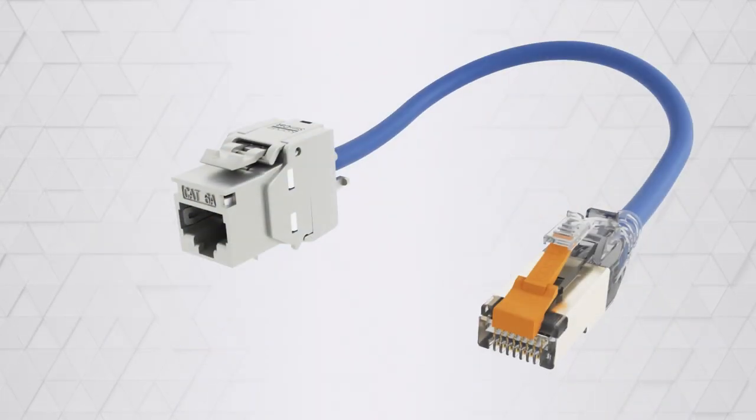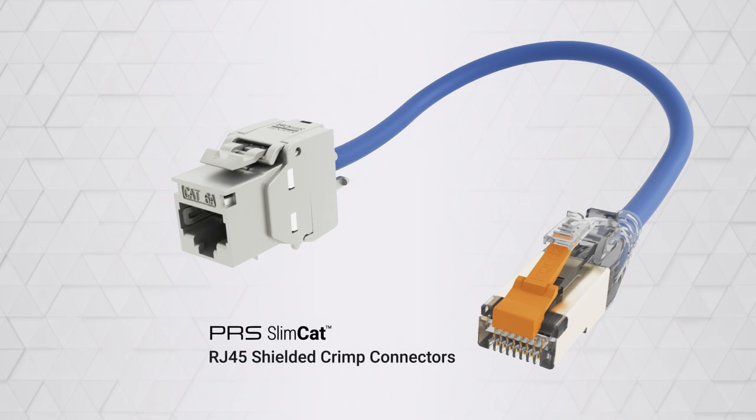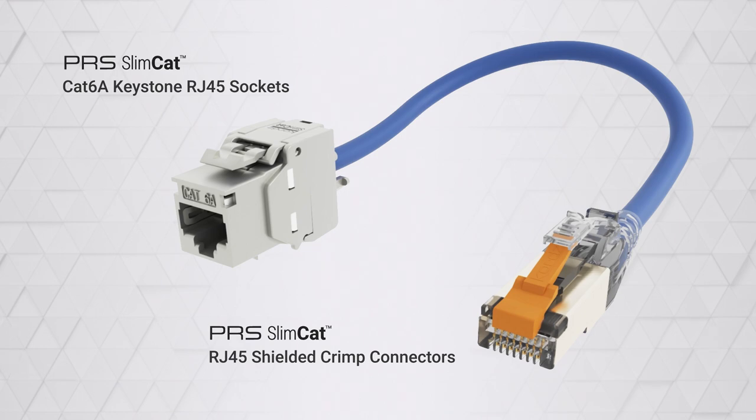Completing the Kord's PRS SlimCat system are the PRS SlimCat RJ45 shielded crimp connectors and the CAT6A Keystone RJ45 sockets.